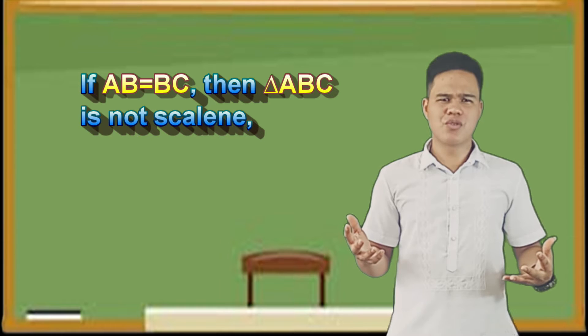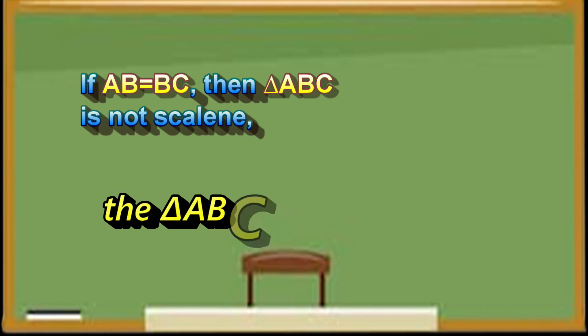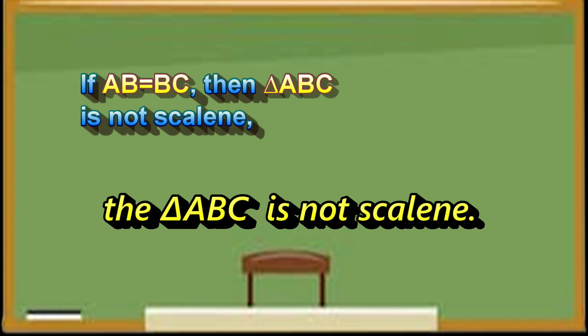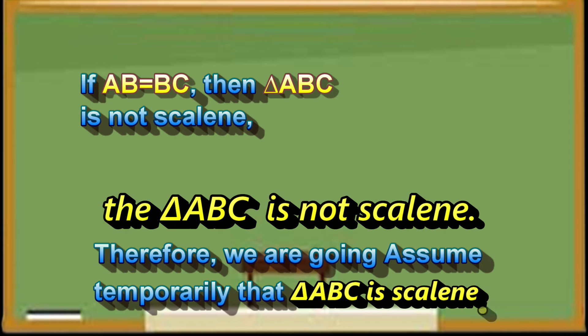Where is now our conclusion? Yes, the triangle ABC is not isosceles. Therefore, we are going to assume temporarily the opposite, that triangle ABC is isosceles.